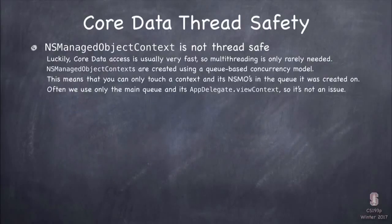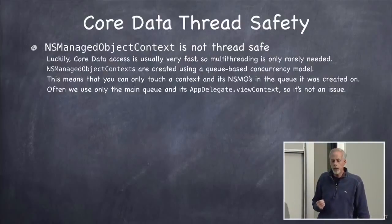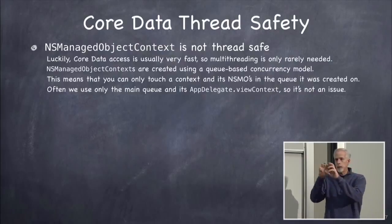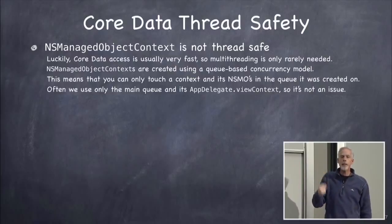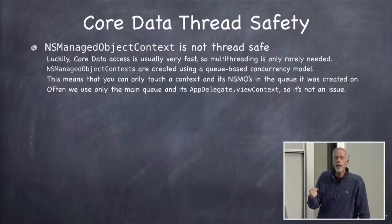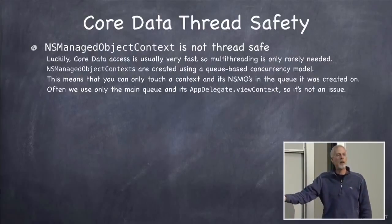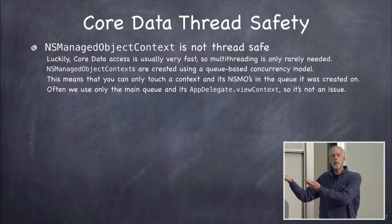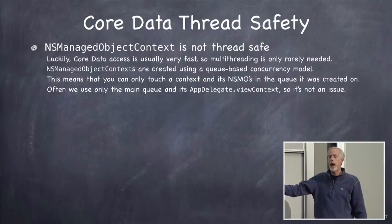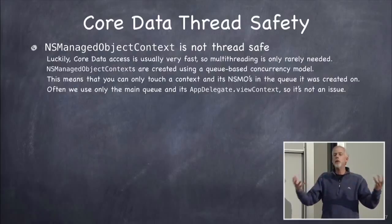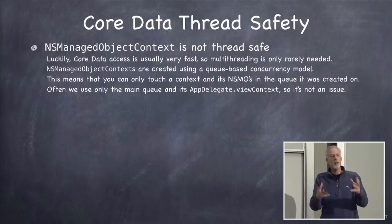I told you I was gonna talk about Core Data thread safety, so here it is. NSManagedObjectContext — the context thing, that thing that you're sending executes to, the things you're hitting save on, the things you're using to create a subcontext — that handle on the database is not thread safe. A context can only be used on the queue that it was created on. If you passed a context to another queue, or even just passed it a managed object, that's not gonna work, because that object was created on the other context. Not only the context, but everything you create on that context has to all be done in the same queue.